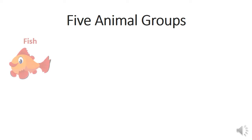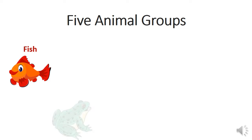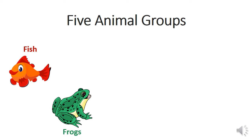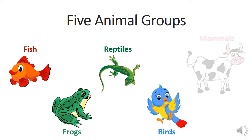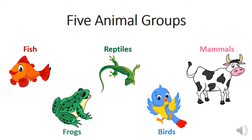First of all, what are the five animal groups that we learned about? We learned about fish, frogs, reptiles, birds, and mammals. So they are five animal groups: fish, frogs, reptiles, birds, and mammals.